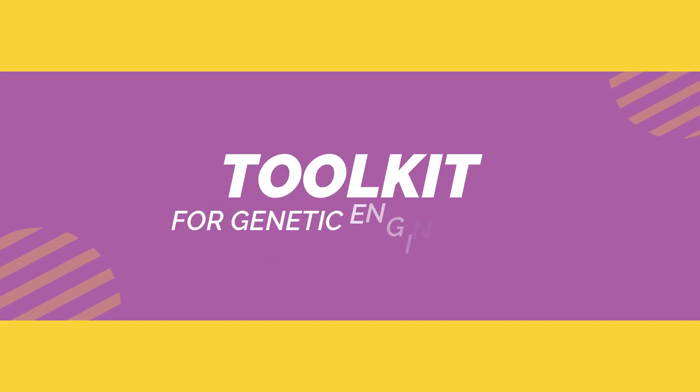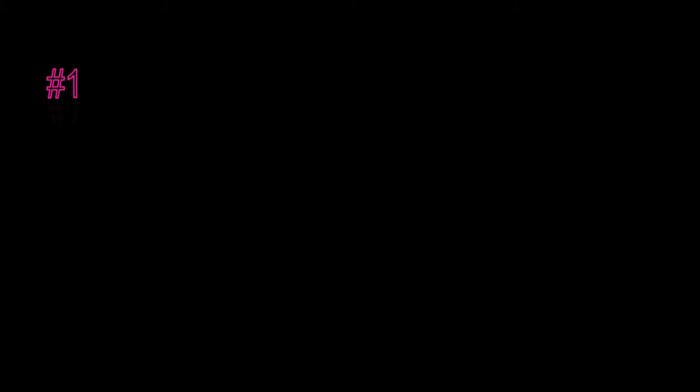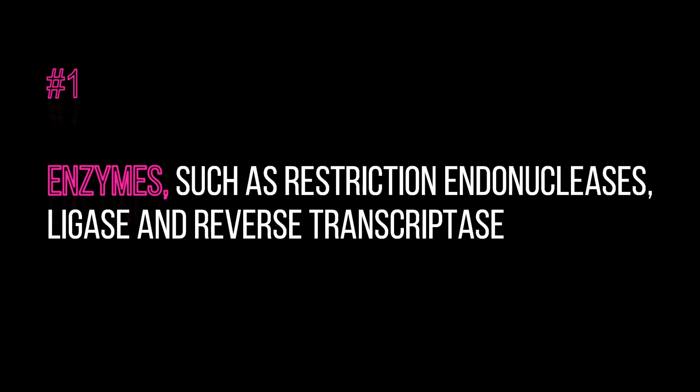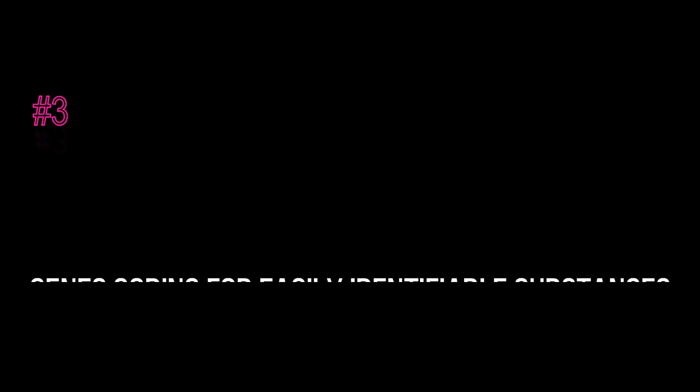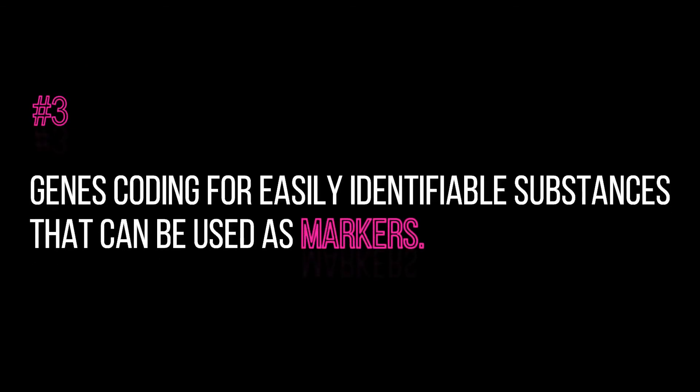To perform these steps, the genetic engineer needs a toolkit consisting of: first, enzymes such as restriction endonucleases, ligase, and reverse transcriptase; second, vectors including plasmids and viruses; and third, genes coding for easily identifiable substances that can be used as markers.